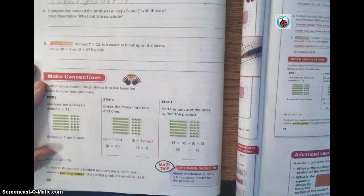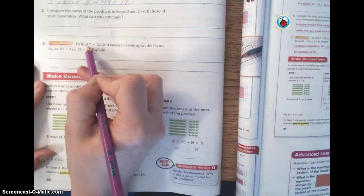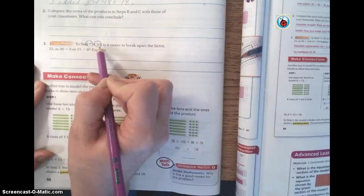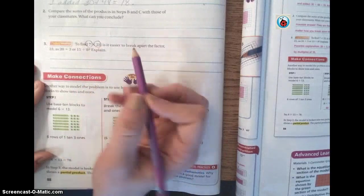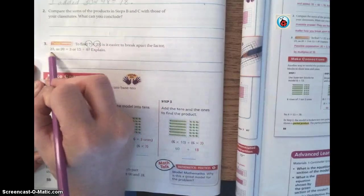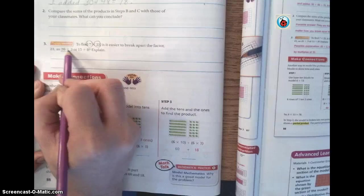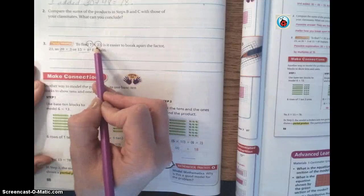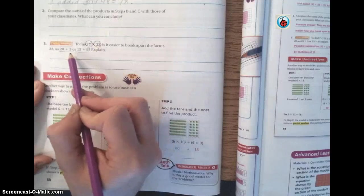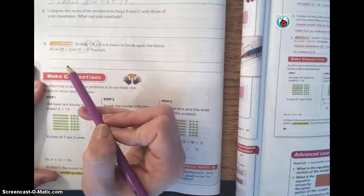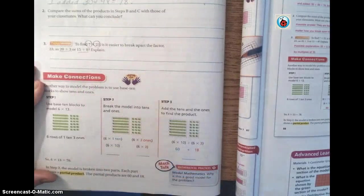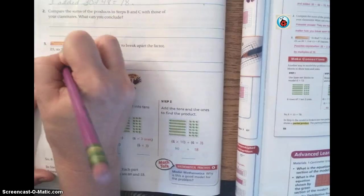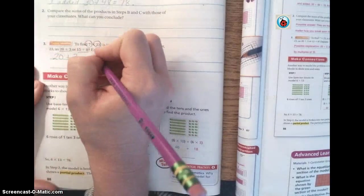So number 3, it says to find 7 times 23. You know to use distributed property, you're going to break apart either 7 or 23. Well, we're going to break apart 23, right? Because that's a bigger number. Basically, this is asking, is it smarter to do 20 plus 3 or 5 plus 8? What do you guys think? Which one's smarter, 20 plus 3 or 5 plus 8? Dylan? 20 plus 3. Why? Because it's easier. Because it's easier because we know how to multiply by tens, don't we?